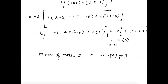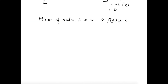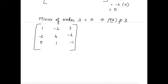Since the minor of order 3 is 0, rank of A is not equal to 3. So we now have to check the minor of order 2. We write a 2×2 submatrix from the matrix. The rank is confirmed to be less than 3, so we check if rank equals 2 by finding a non-zero 2×2 minor.